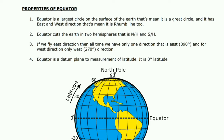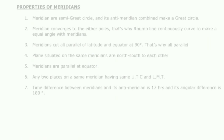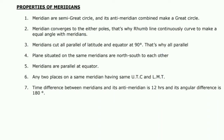Properties of meridians: Number one — meridians are semi-great circles, and a meridian combined with its anti-meridian makes a great circle. Number two — meridians converge to either pole; that's why the rhumb line continuously curves to make an equal angle with each meridian. Number three — meridians cut all parallels of latitude and the equator at 90 degrees; that's why parallels of latitude are rhumb lines.